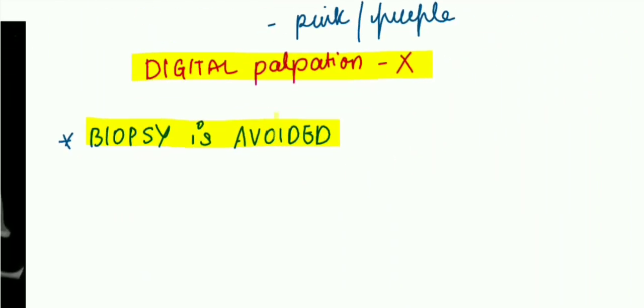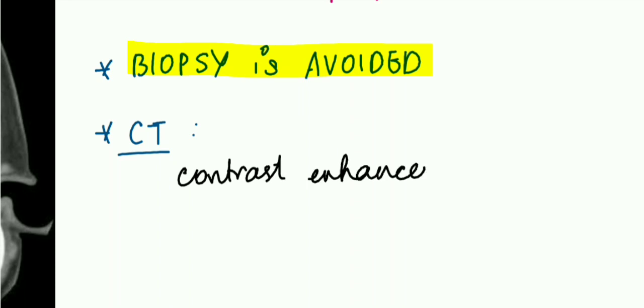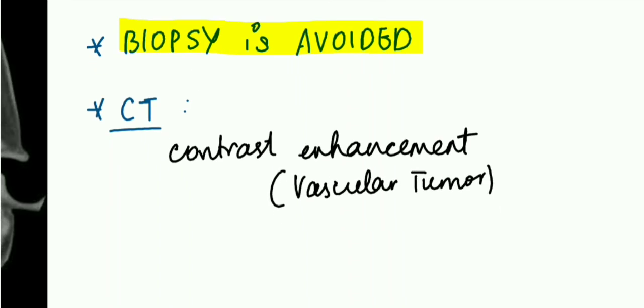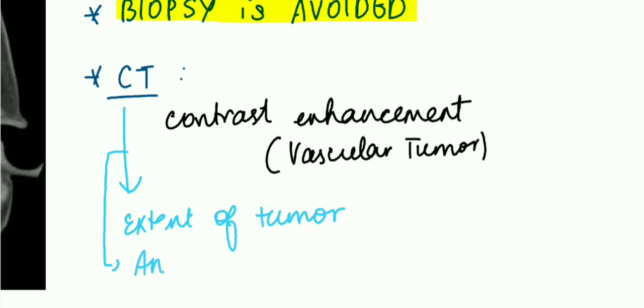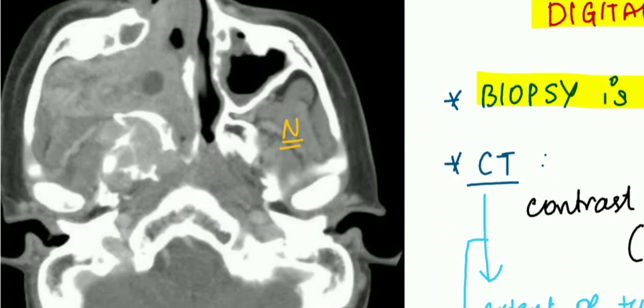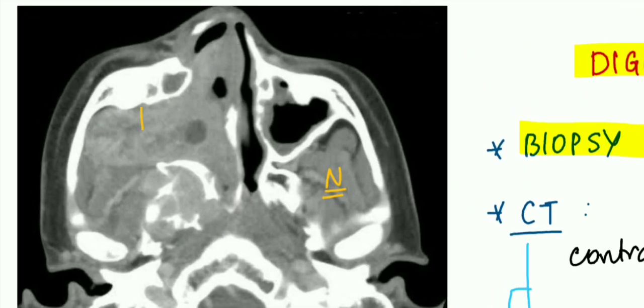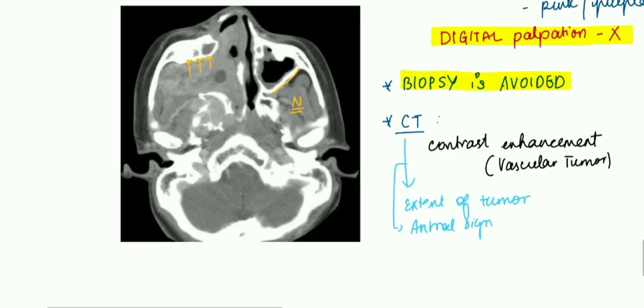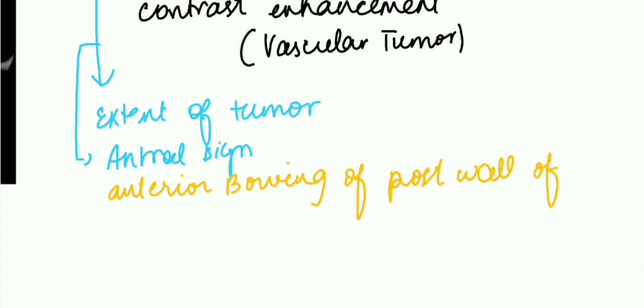Next, the CT. CT scanning is really important, and here we use contrast-enhanced CT scan because it is a vascular tumor. This helps in determining the extent of the tumor, how far the tumor has spread, and also we can visualize the antral sign here. In this picture, we are seeing this is the normal side and this whole highlighted section is the tumor. This is the posterior wall of the maxillary sinus and it is anteriorly bent. The other side is absolutely normal. So we find anterior bowing of the posterior wall of maxillary sinus, and this is called the antral sign. We can also do MRI.